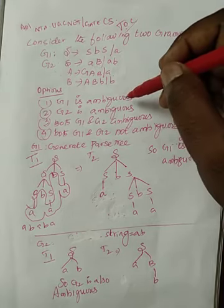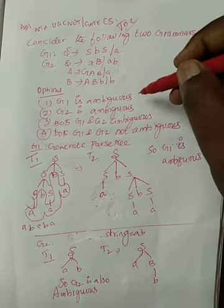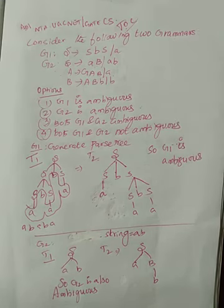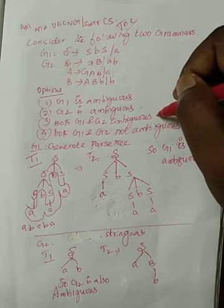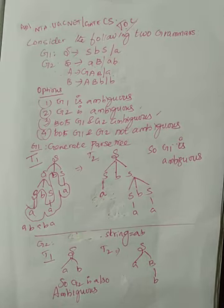They will be asking four choices: whether G1 is ambiguous, or G2 is ambiguous, or both G1, G2 are ambiguous, or both G1 as well as G2 not ambiguous.